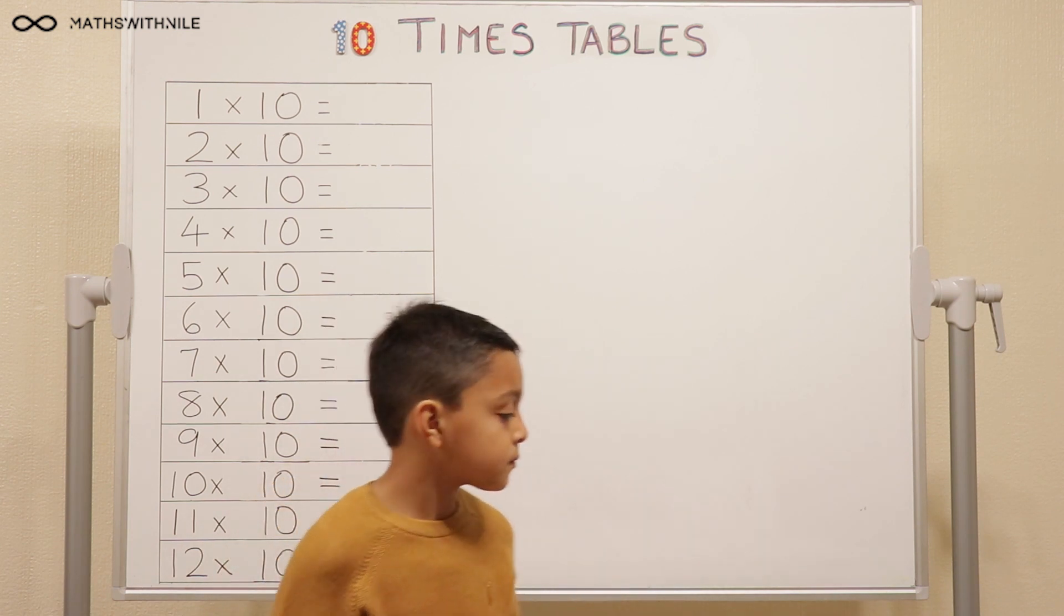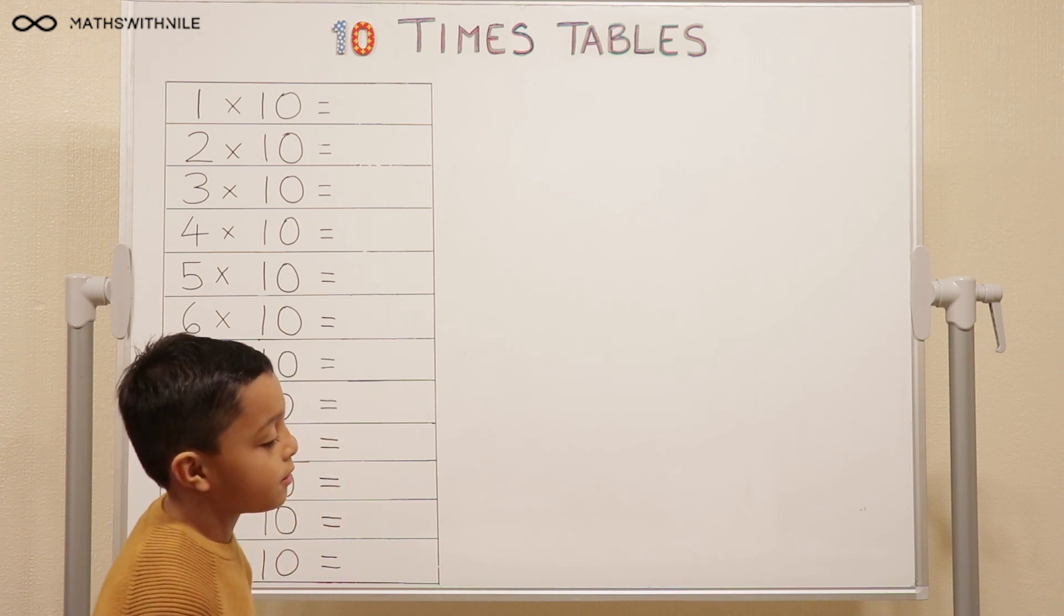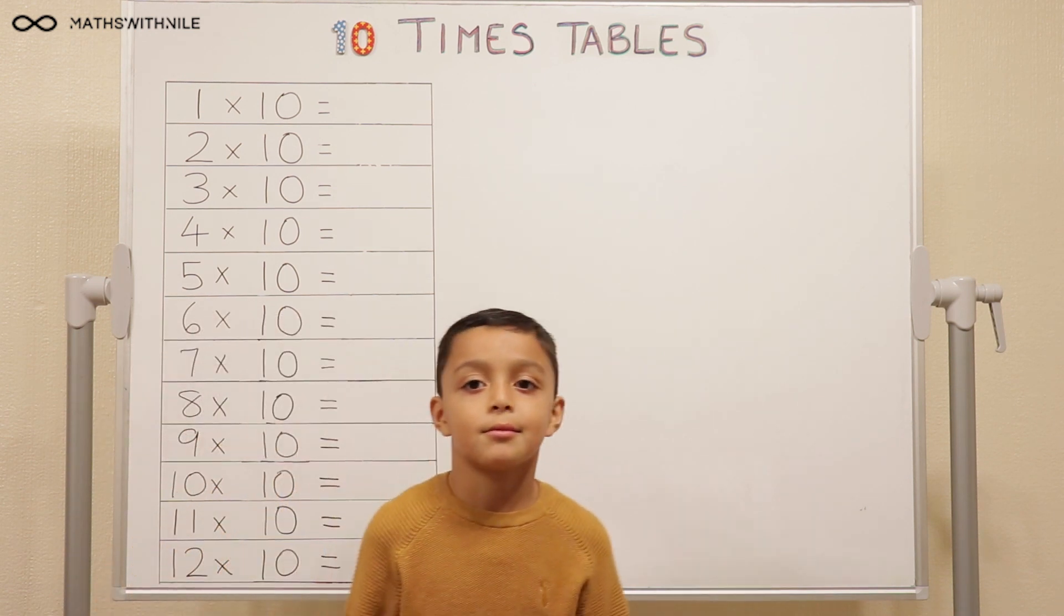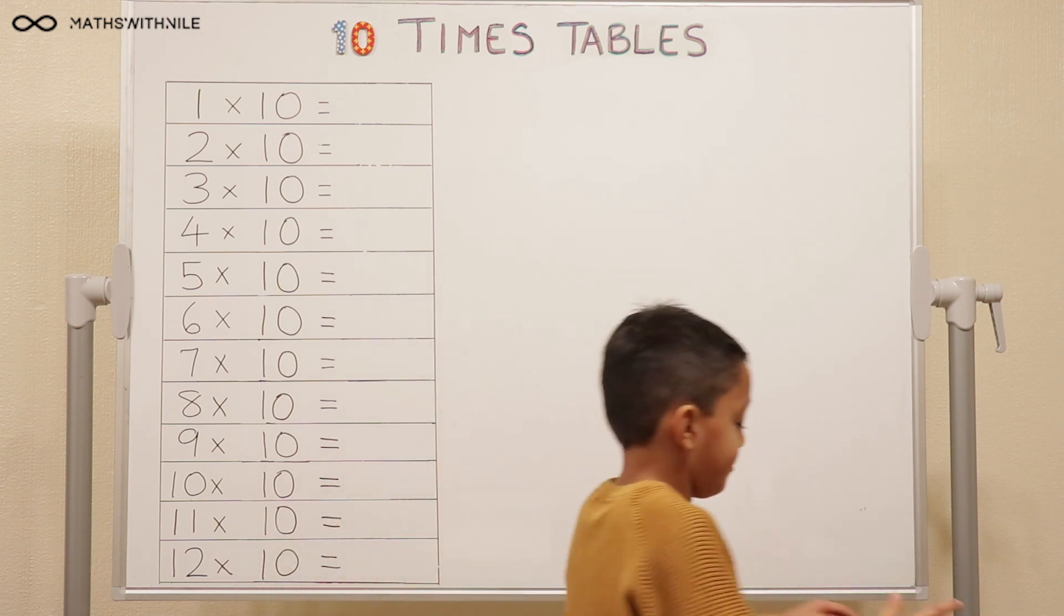So can you read the first question first? One lot of 10. So one times 10 is the same as one lot of 10. Yeah, so 10 basically. So it's equal to 10. Okay.